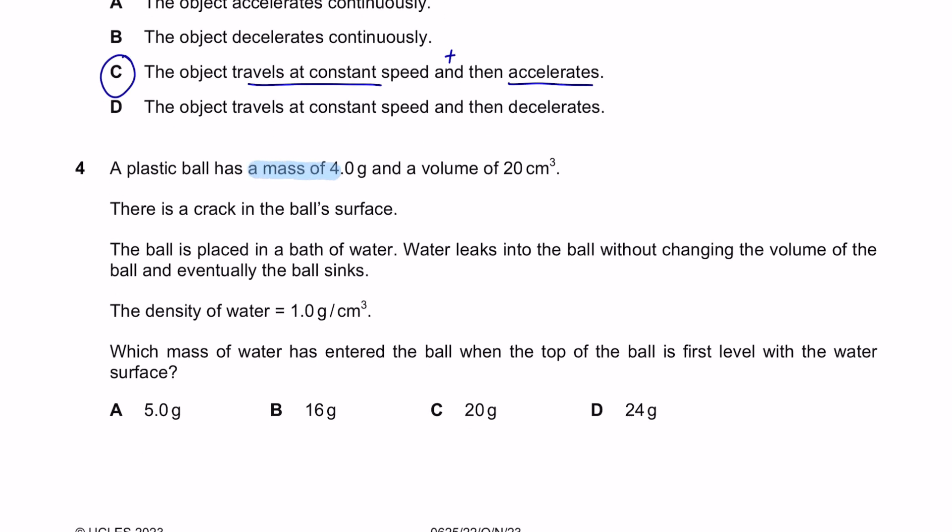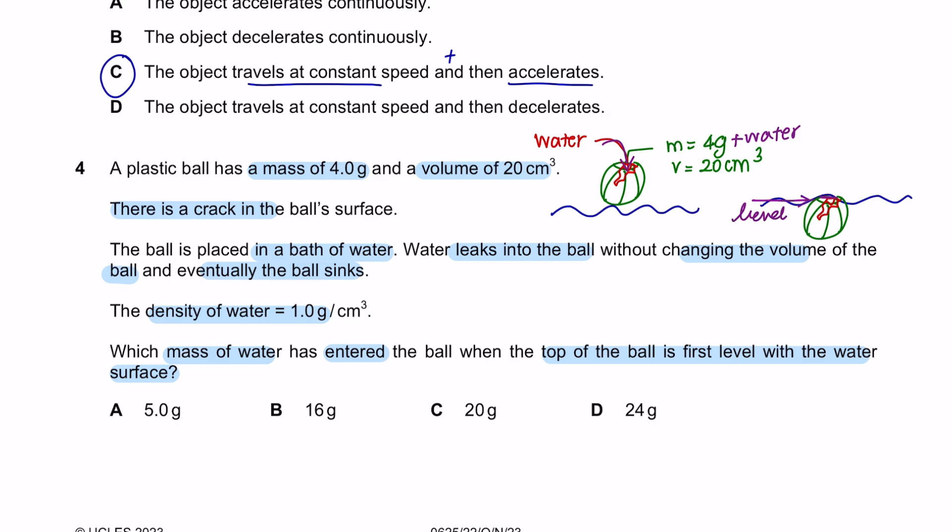Question 4. A plastic ball has a mass of 4 grams and a volume of 20 centimeter cube. There is a crack in the ball's surface. The ball is placed in a bath of water. Water leaks into the ball without changing the volume of the ball and eventually the ball sinks. The density of water is 1 gram per centimeter cube. Which mass of water has entered the ball when the top of the ball is first level with the water surface? Okay, let's first try to understand the question. Initially, this was the position of the ball and then we had a crack in the ball and a certain amount of water has entered into the ball. And when the water entered into the ball, it began to sink. So we're looking to find the mass of water that has entered into the ball when the top of the ball is at the surface of the water.